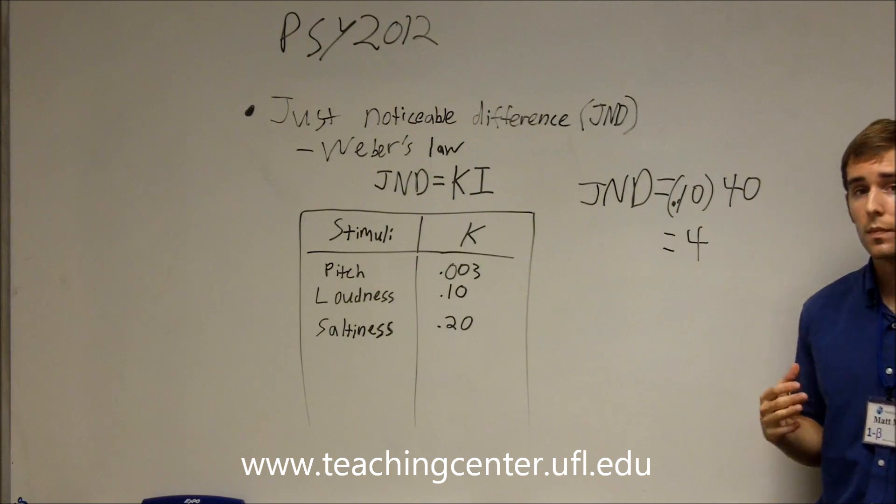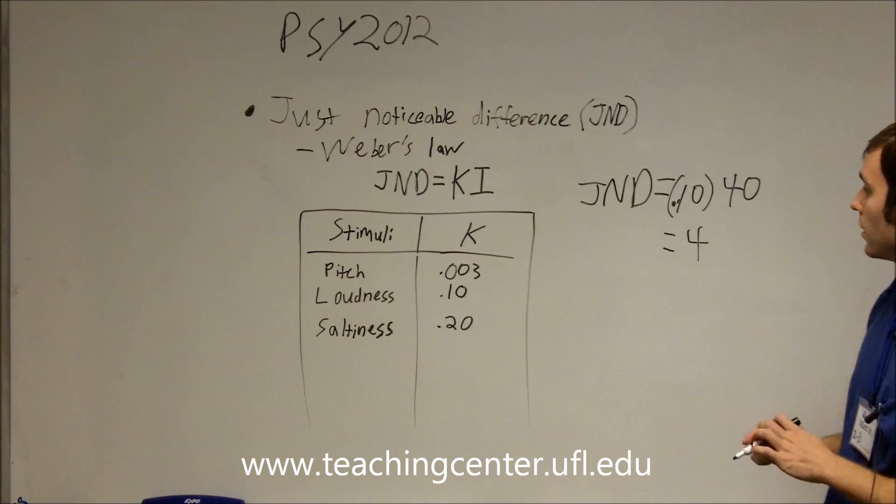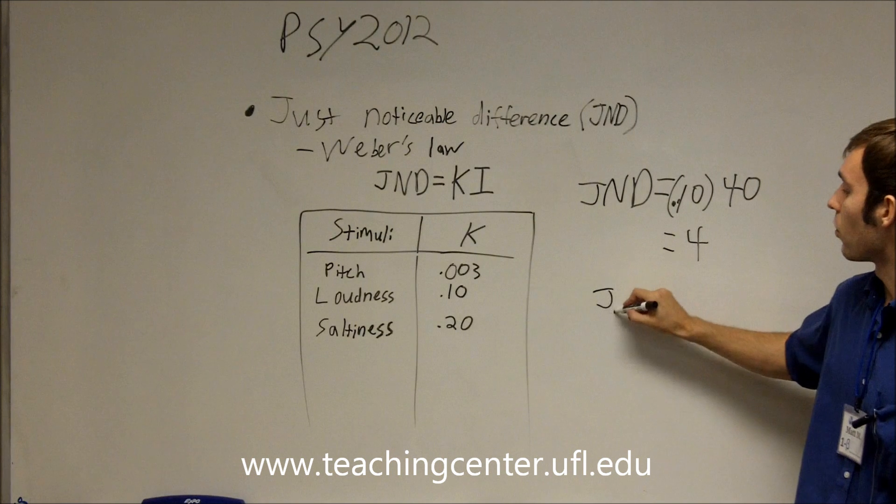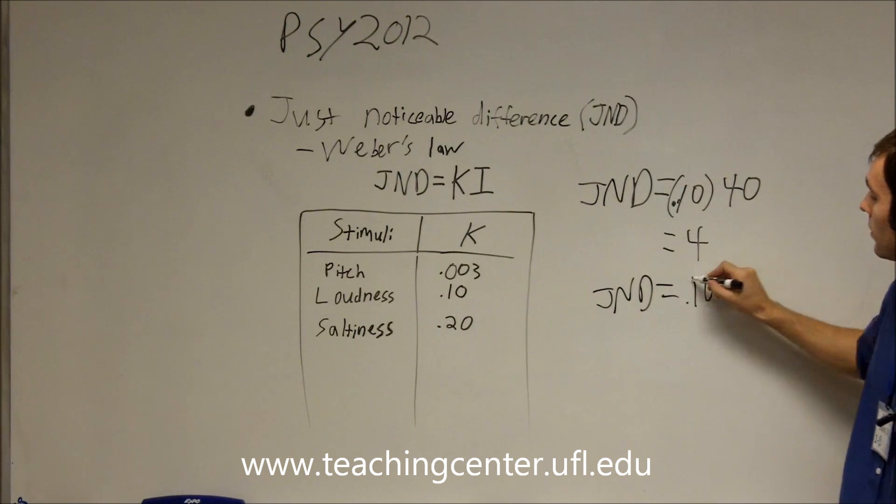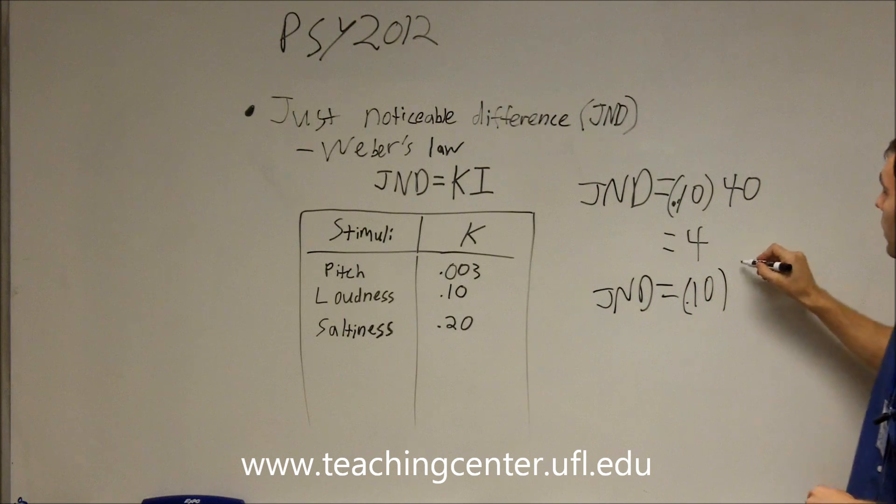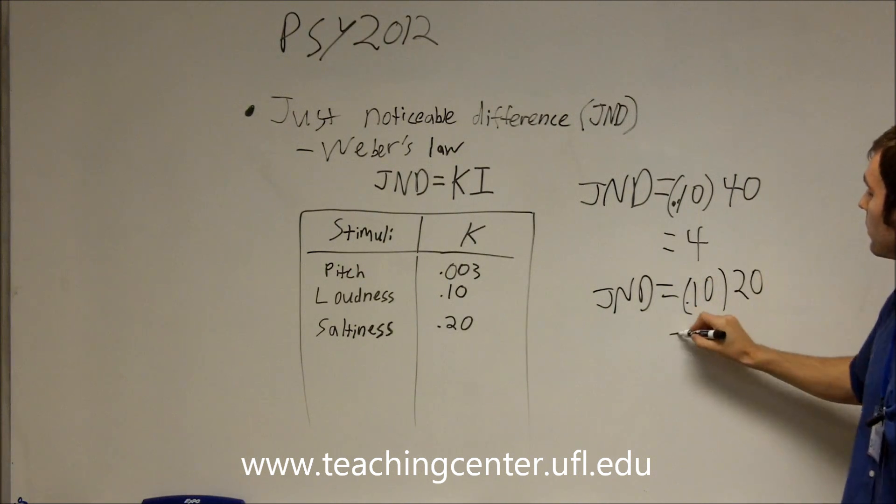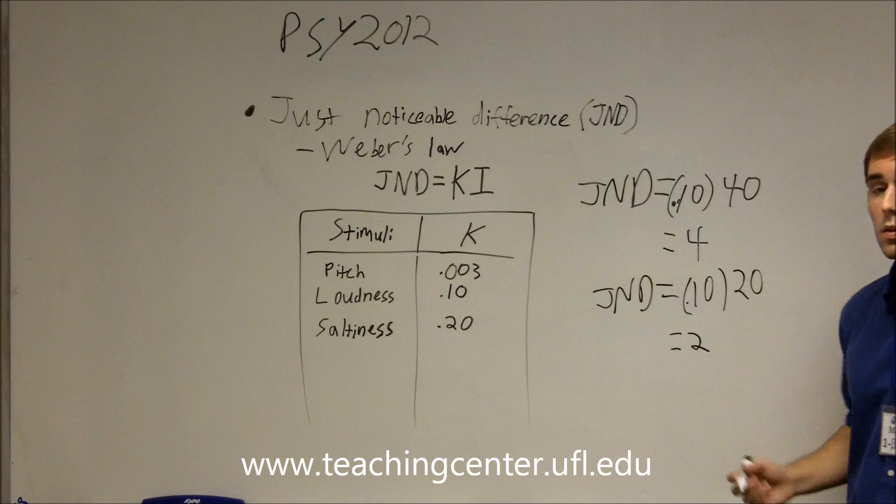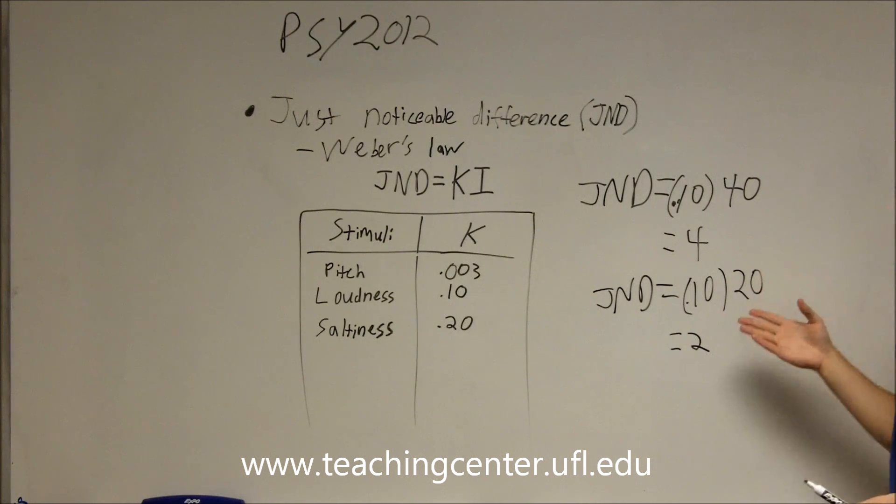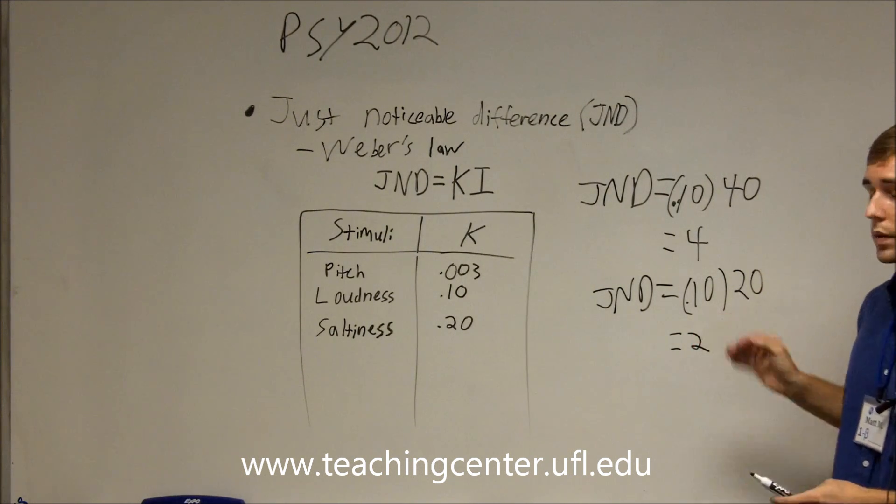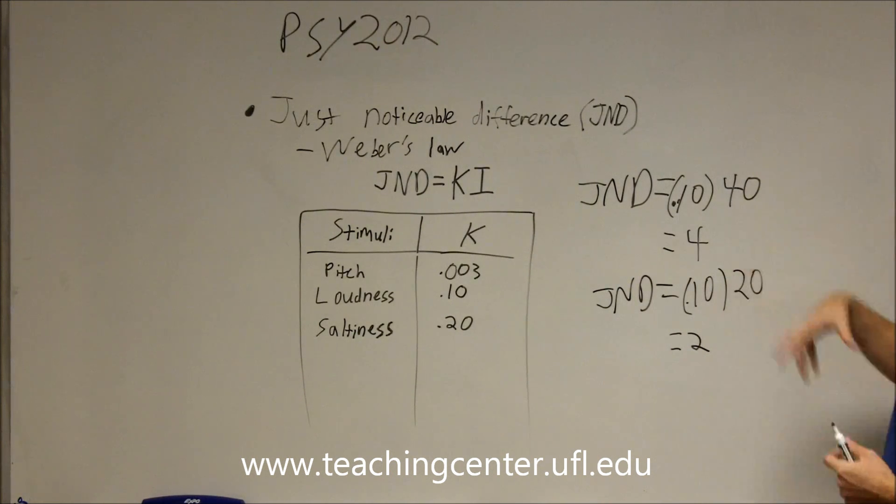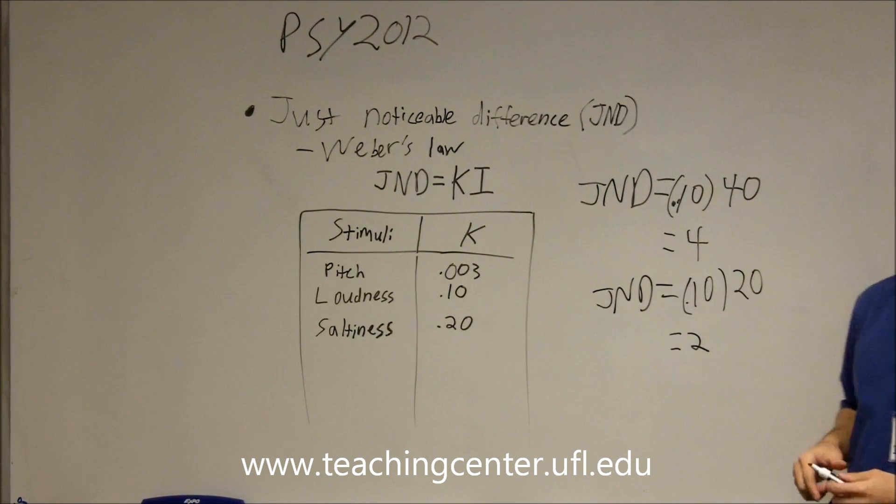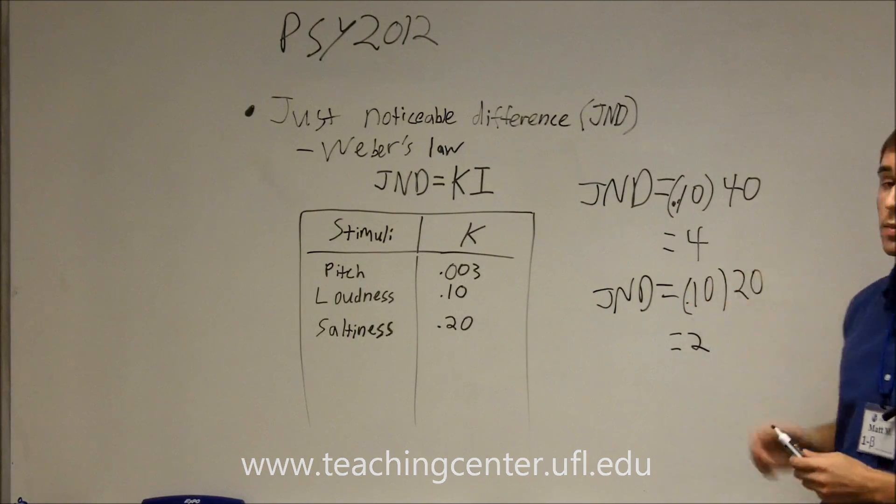Now, to illustrate how the intensity affects it, let's say we're listening to it at 20. So, this is going to end up 2. So, if we're listening to it at a softer volume and we turn it down by 2, that's the just noticeable difference there. Whereas, if it's a much stronger stimulus, then we're going to have to change it by more.